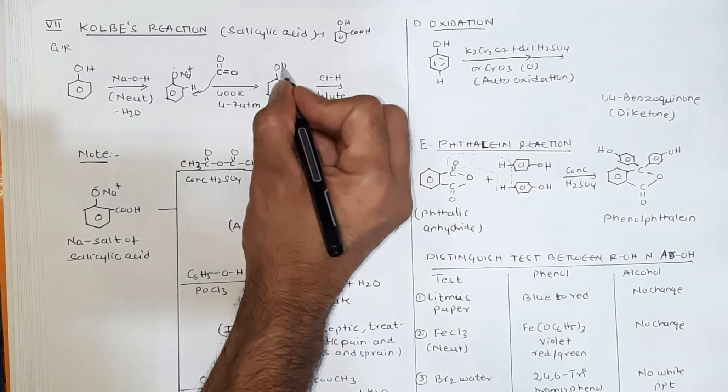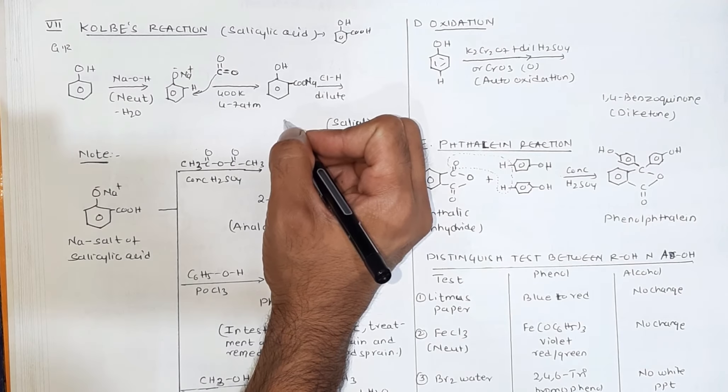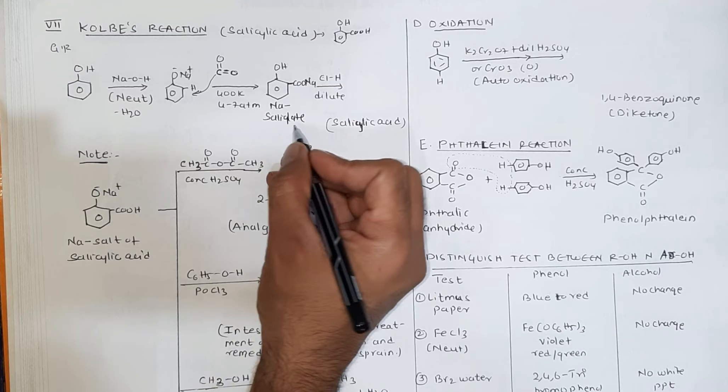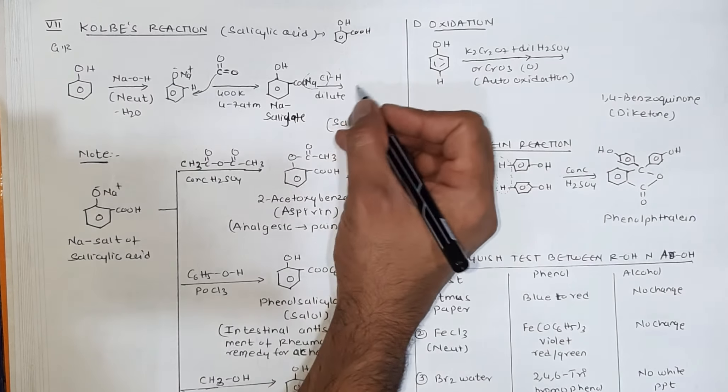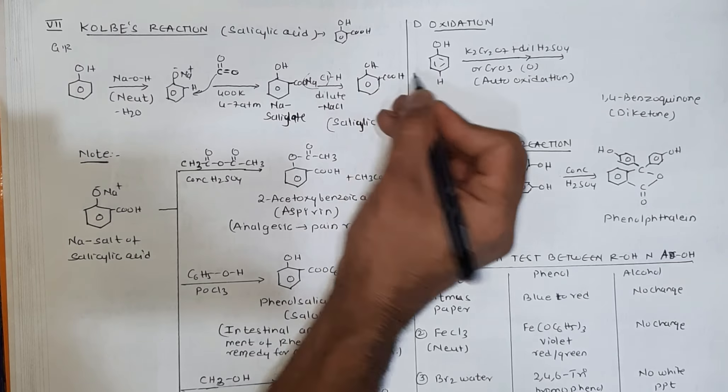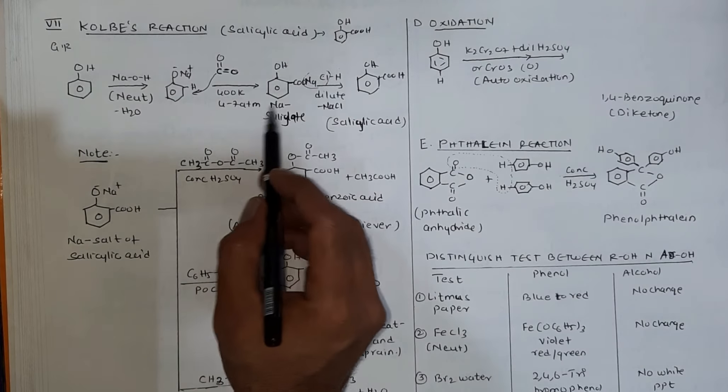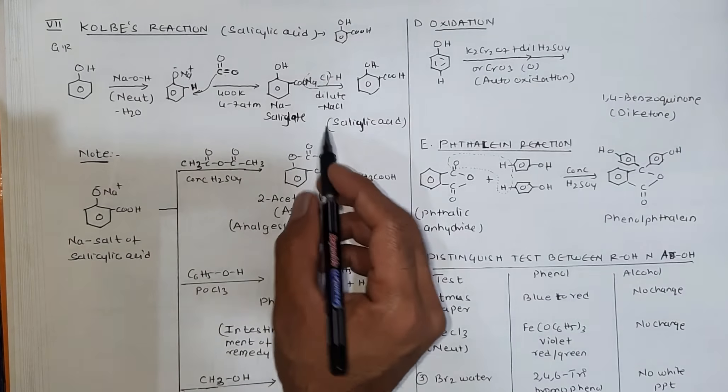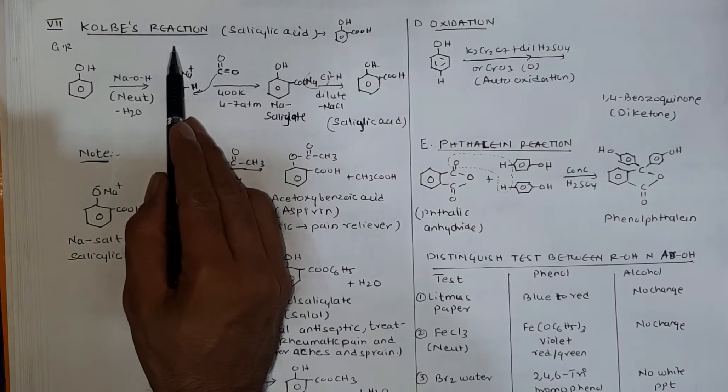Phenol with OH converts to COONa sodium salt of salicylic acid, called sodium salicylate. When this salicylate reacts with HCl, NaCl forms and hydrolysis results in formation of OH and COOH salicylic acid. First step is neutralization, second step is attack of CO2 at 400 Kelvin and 4-7 ATM pressure to form sodium salicylate. Then dilute HCl hydrolysis gives salicylic acid. This is Kolbe's reaction.